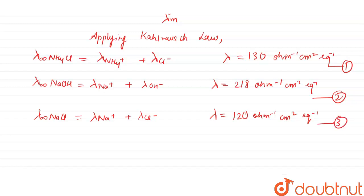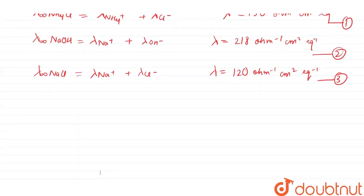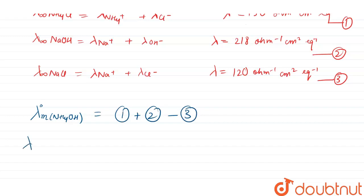From these equations we want to obtain NH4OH. So we add equation 1 with equation 2, giving us NH4OH along with Cl⁻ and Na⁺. Since we don't want Na⁺ and Cl⁻, we subtract equation number three. So the lambda-m-not of NH4OH equals equation 1 plus equation 2 minus equation 3.